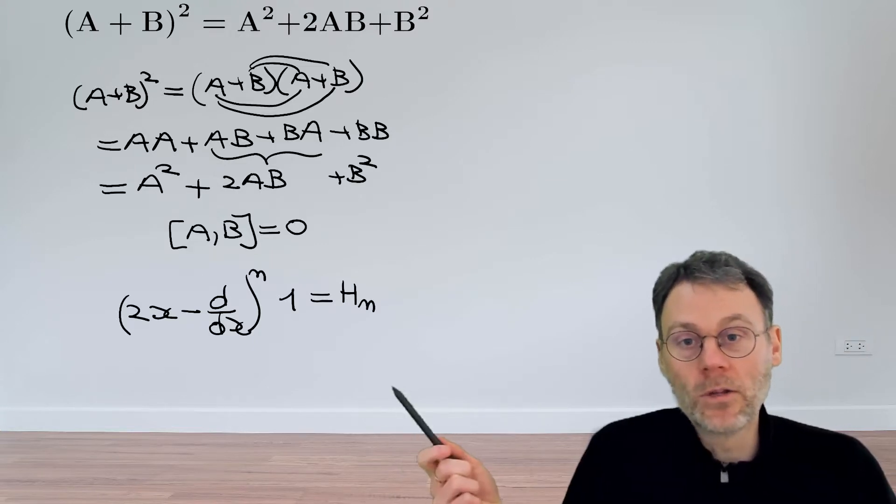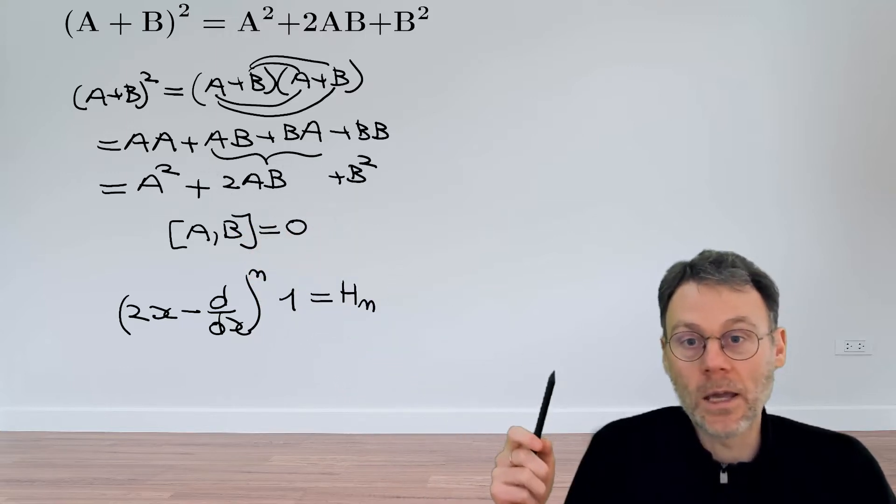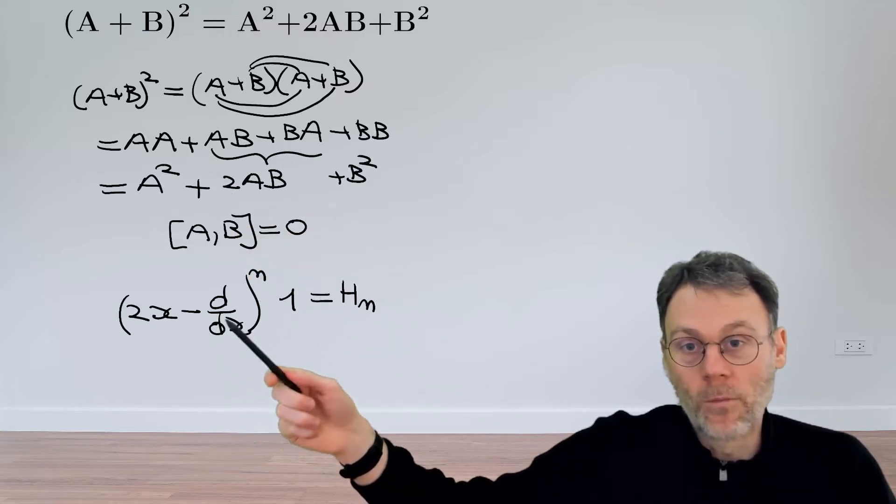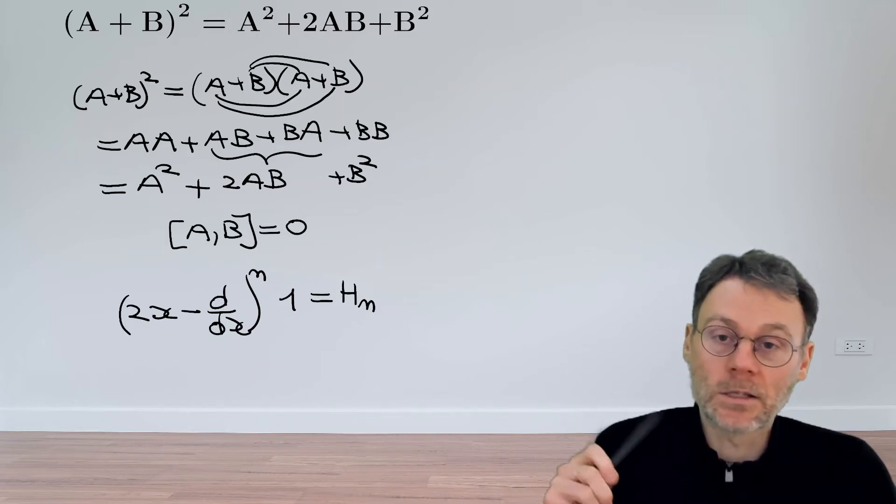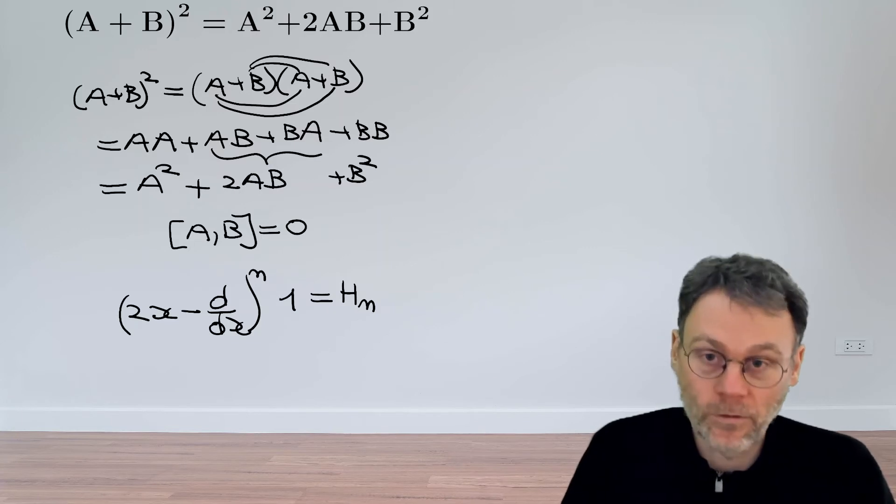There too we need to be careful that AB is not equal to BA. Likewise, the operators x and d/dx don't commute, as you know from a previous exercise. So you have to be careful in such cases.